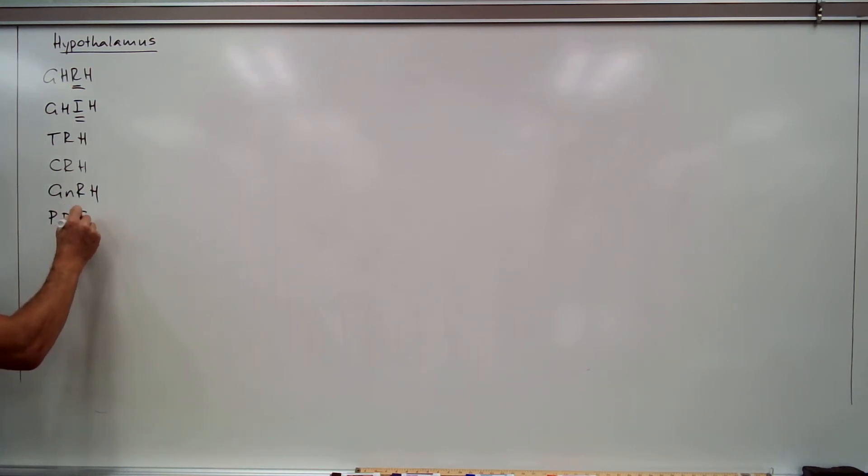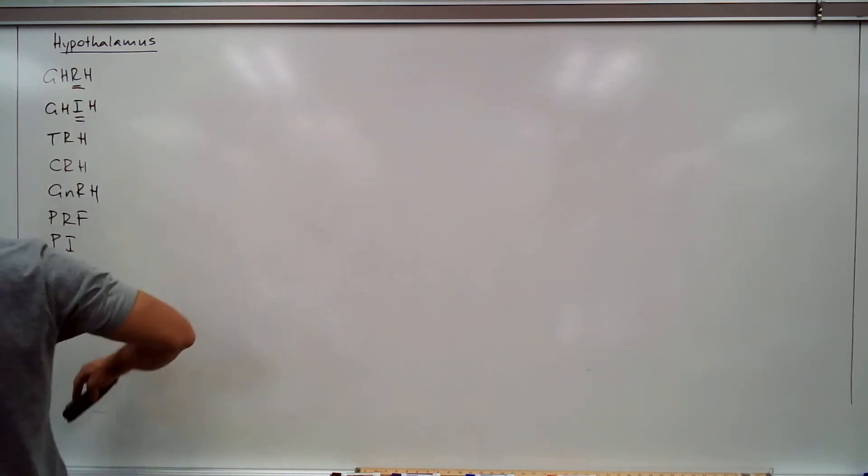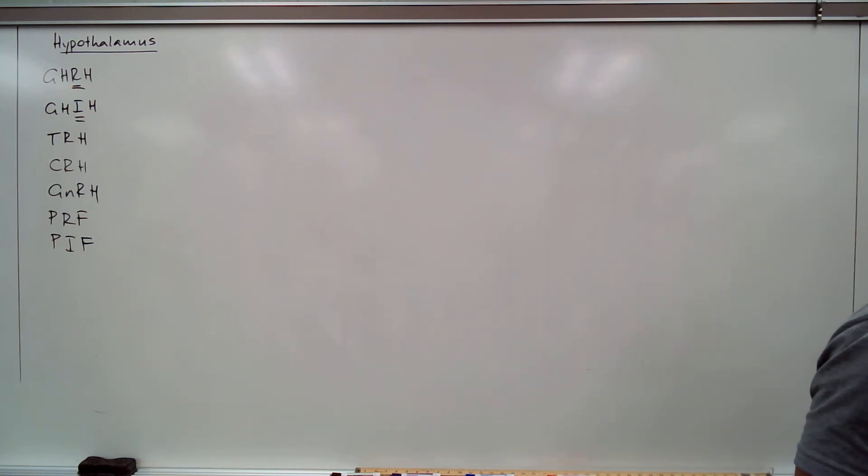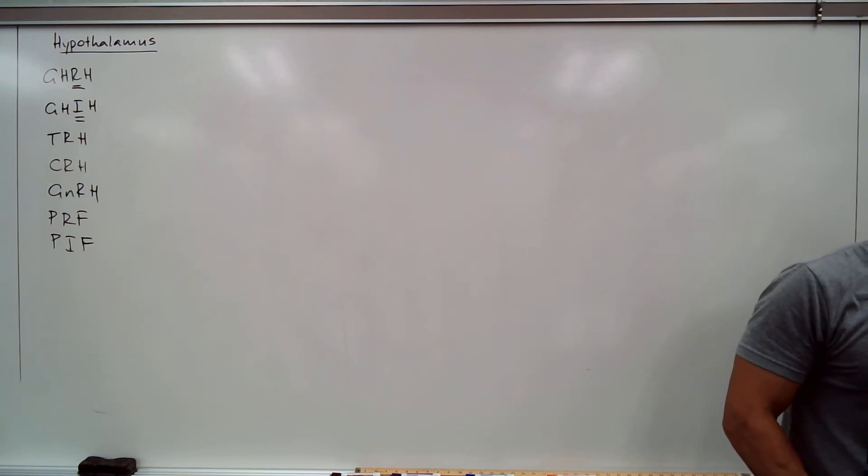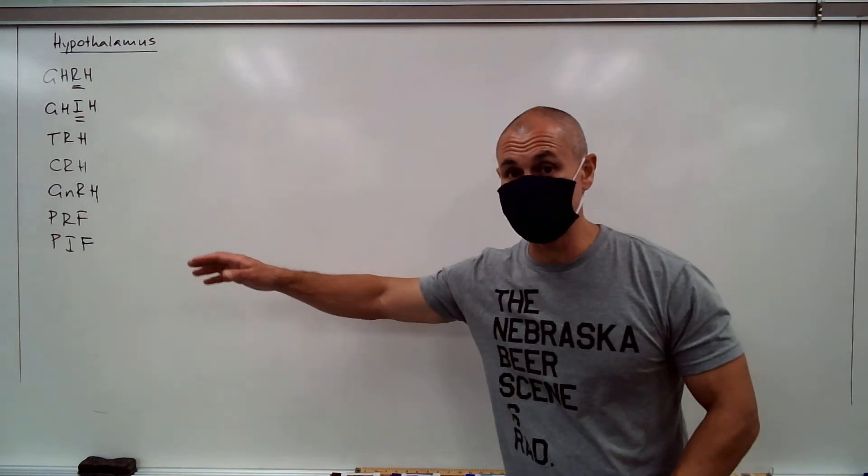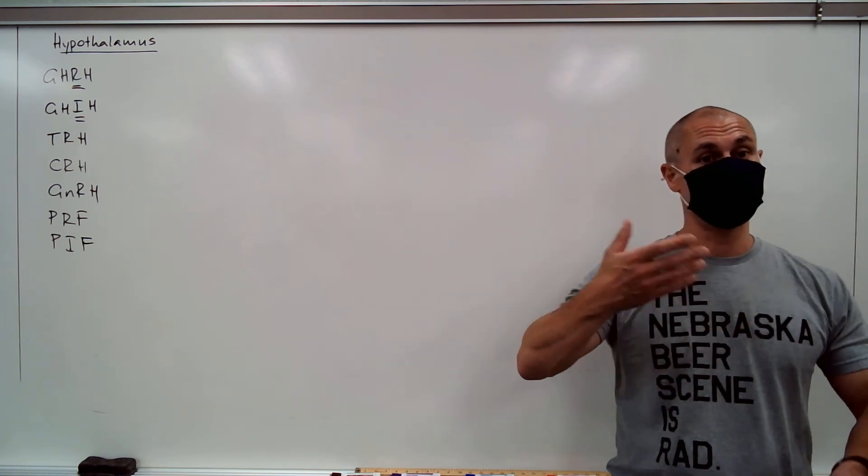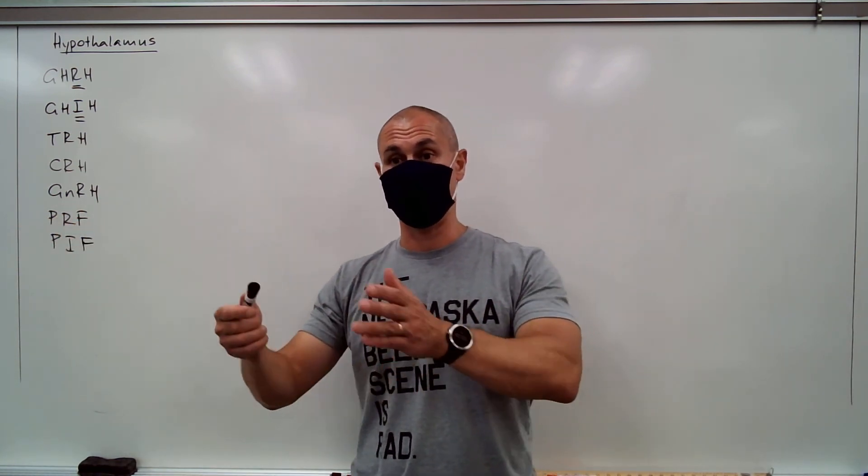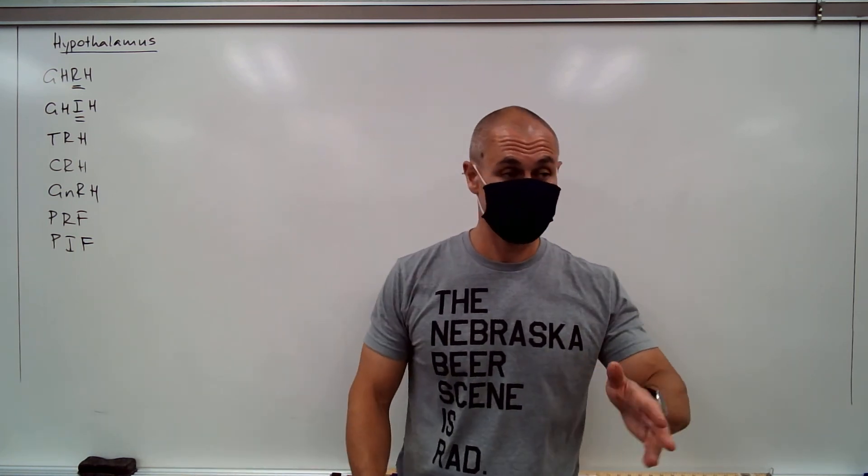Prolactin releasing factor, PRF. Prolactin inhibiting factor, PIF. That makes a little bit more sense, I think. Hormone with the name prolactin - what do you think it does? Lactin. Lactose. Where do you find lactins? Lactating. Milk. So prolactin deals with milk, right? Prolactin stimulates milk production. So prolactin releasing factor will release prolactin, which will stimulate lactation, and vice versa. That makes a little bit more sense.